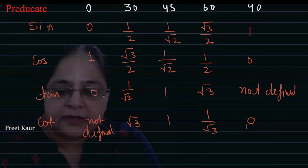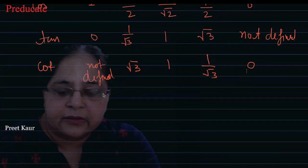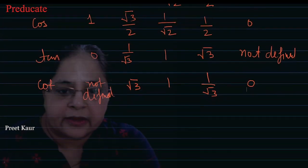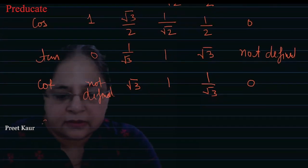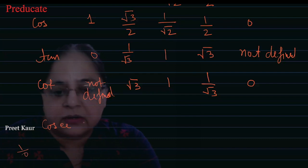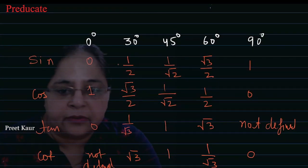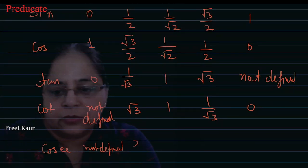See, sin 0 degree was 0. And cosec 0 is the reciprocal, 1 upon 0. What will it be? Not defined. And cosec 30 will be the reciprocal, 2.